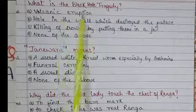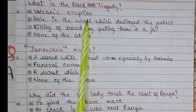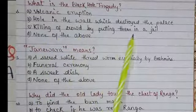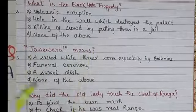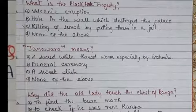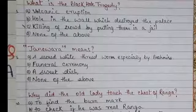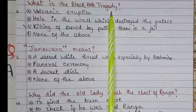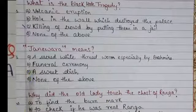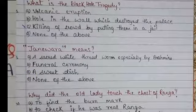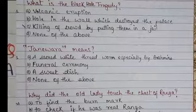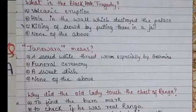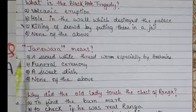What is the Black Hole tragedy? Option A: Volcanic eruption, Option B: A hole in the wall which destroyed the palace, Option C: Killing of a crowd by putting them in a jail, Option D: None of the above. Option C is correct. According to the text, it is related to Bengal history where Sirajud-Dawala put many people who went against his orders into jail, and they died of suffocation.